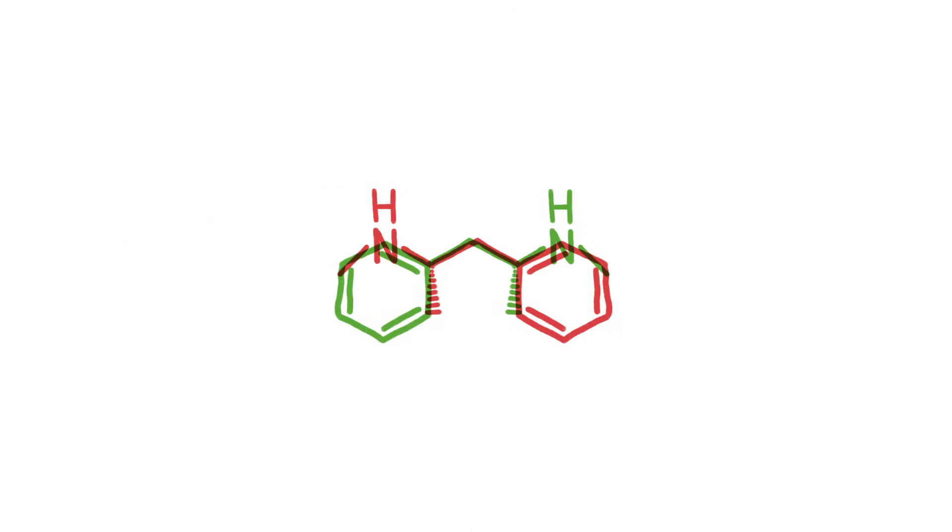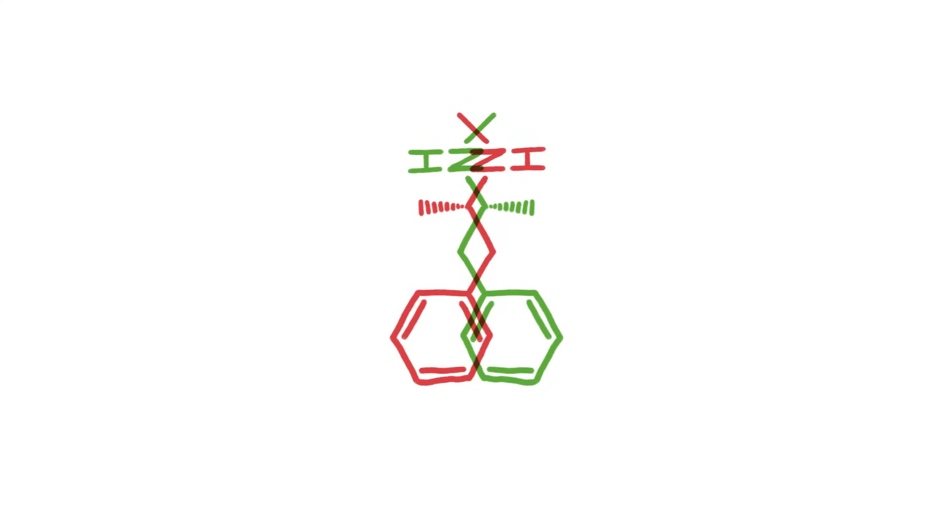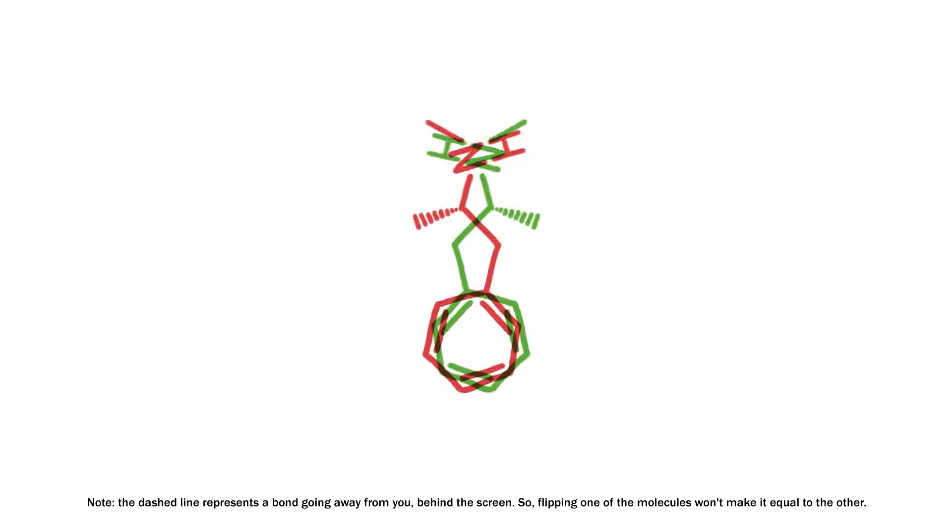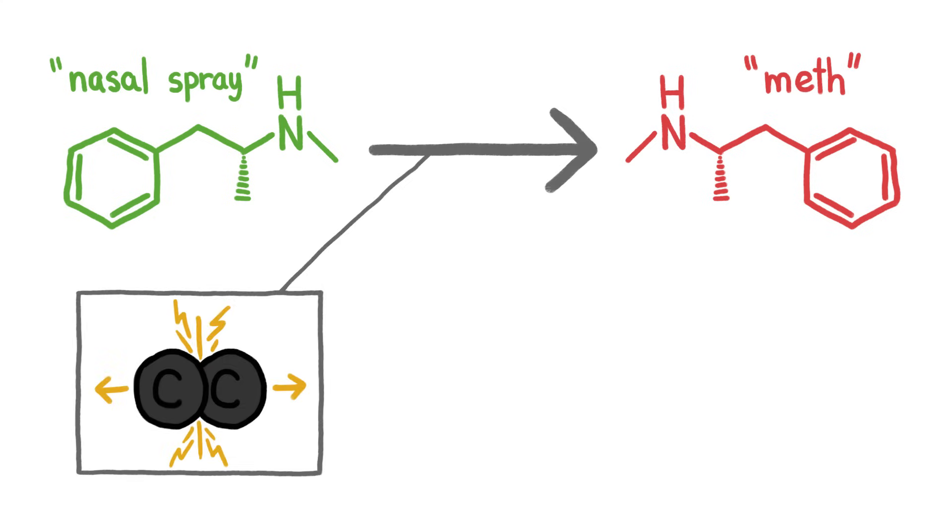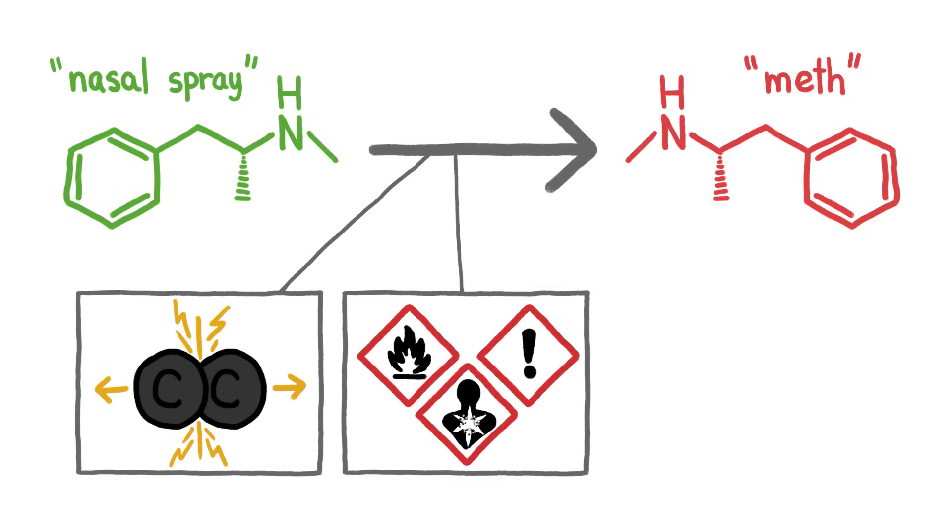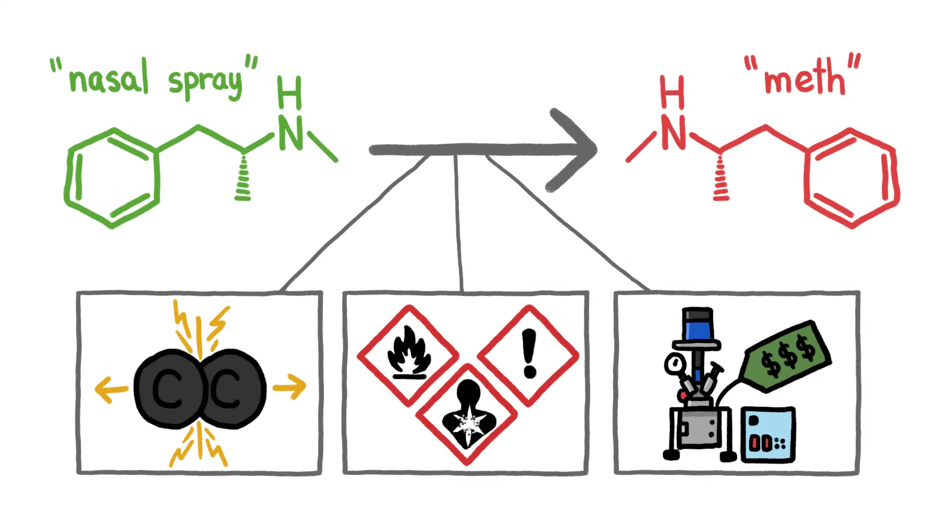Despite mirror molecules' incredibly similar structures, you can't just easily convert one into the other. To turn nasal spray into meth, you'd need to first break its very strong covalent bonds and that requires dangerous reagents and expensive high-pressure lab equipment.